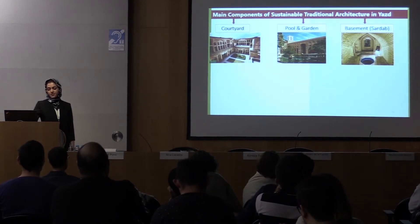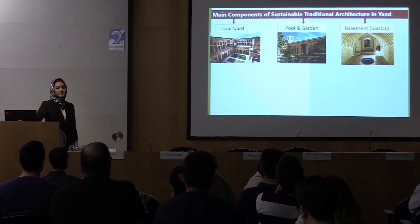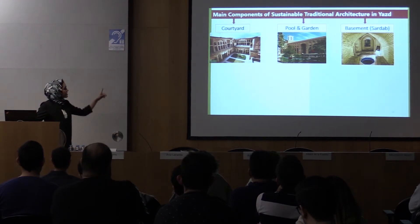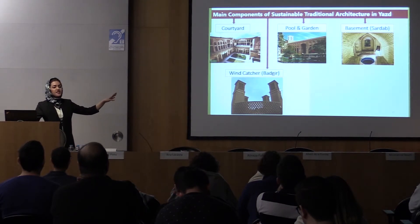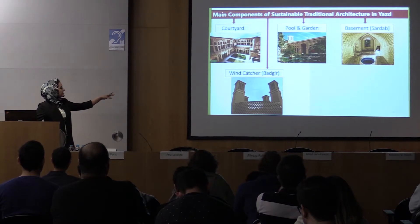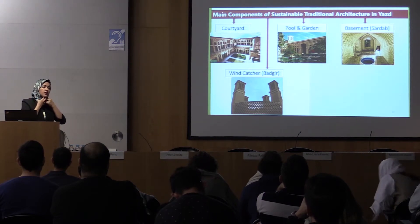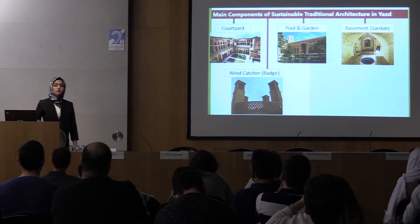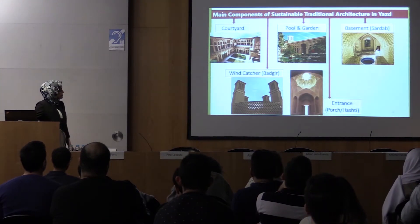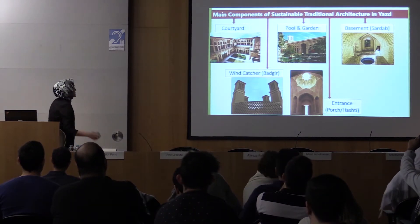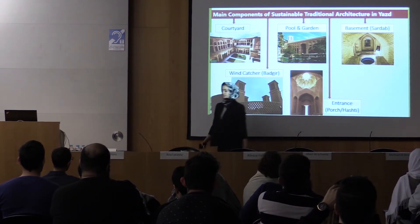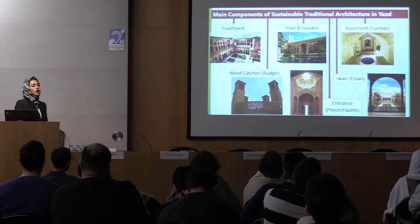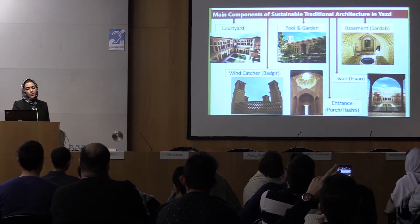There are lots of components of sustainable traditional architecture in Yazd, but I have selected some because time is limited. One is the courtyard — the central courtyard. In the courtyard we have a pool, garden, and a basement we call sardab in Persian. There is also the windcatcher — Yazd is the city of windcatchers and has received UNESCO recognition for this. And we have the entrance, which we call hashti in Farsi, the lighting from the dome called horno, and a kind of semi-open balcony we call ivan in Farsi.